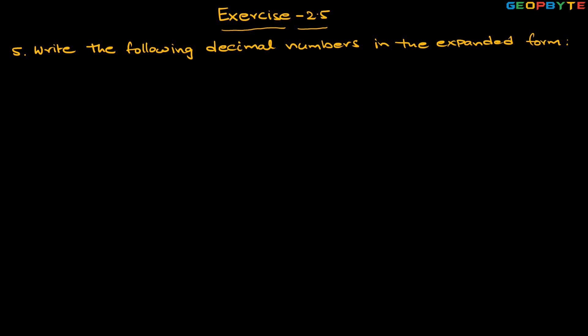The fifth question is: write the following decimal numbers in expanded form. The first one is 20.03. We need to represent this decimal number in expanded form. Here, the zero is at the ones place and two is at the tens place.